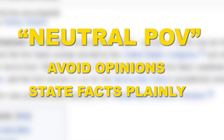The first core content policy is that you should write all articles with a neutral point of view. This means that you should avoid stating opinions and you should try to use neutral language. Stating facts as plainly as possible is a good way to minimize the risk of sounding biased.